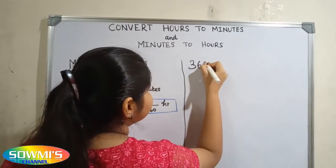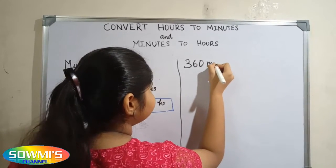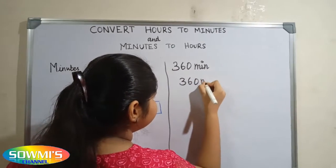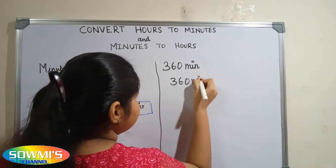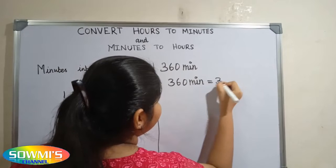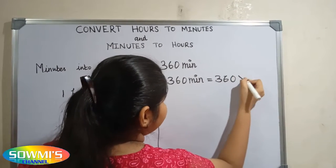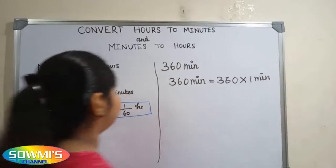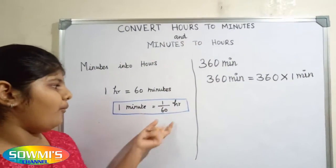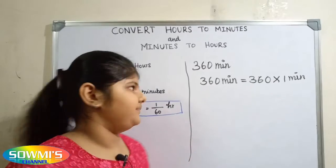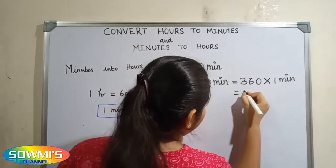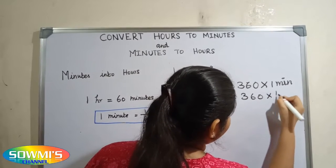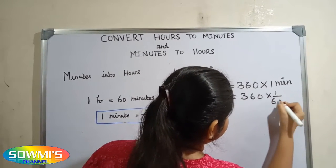360 minutes. 360 minutes is equal to 360 multiplied by 1 minute. Now we have to substitute 1 by 60 hours in the place of 1 minute. So 360 multiplied by 1 by 60 hours.